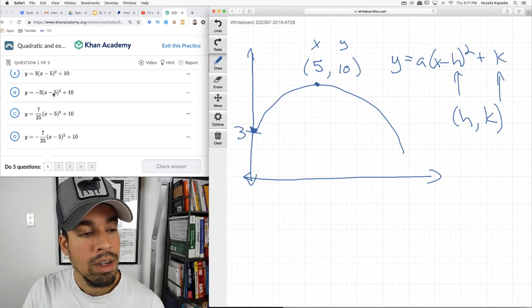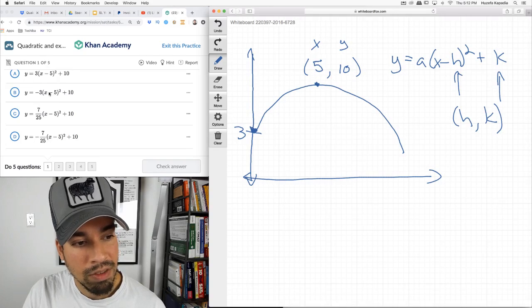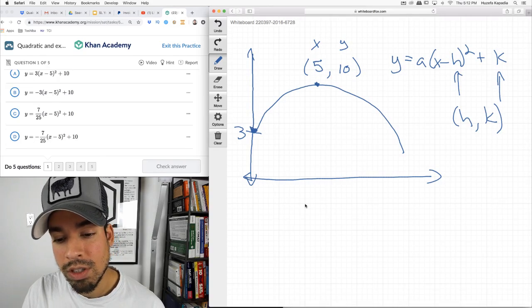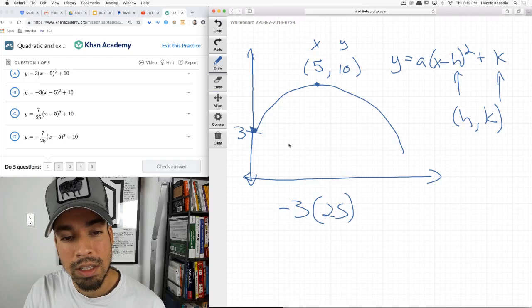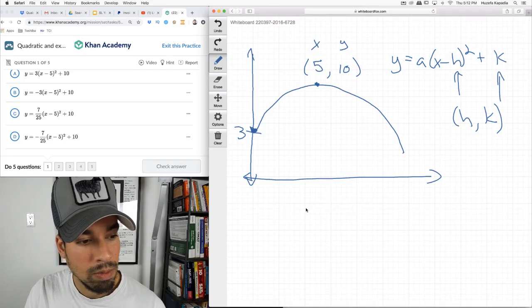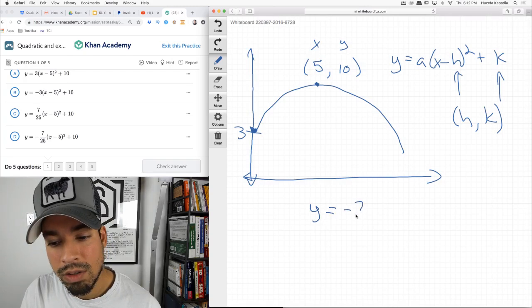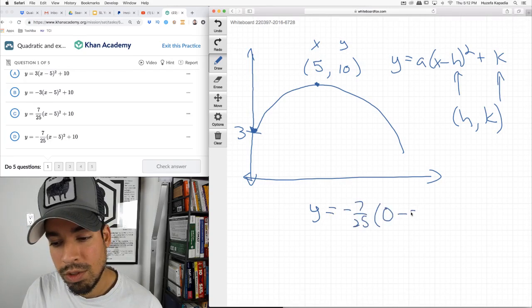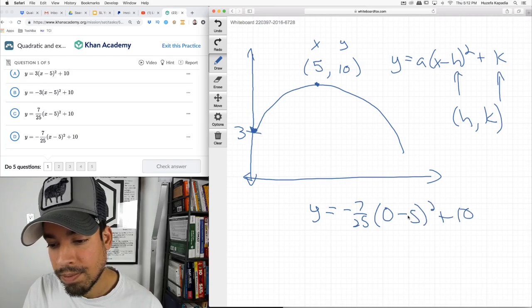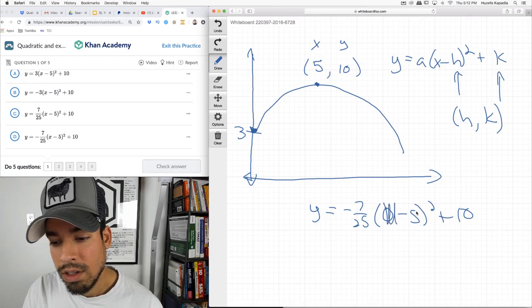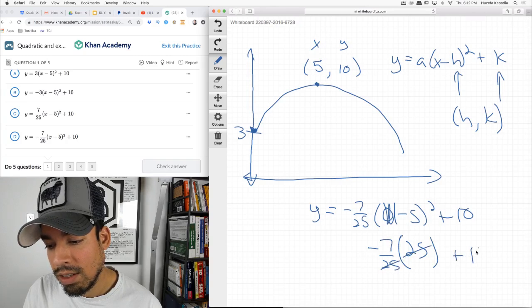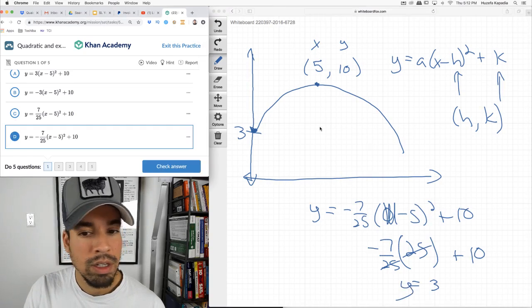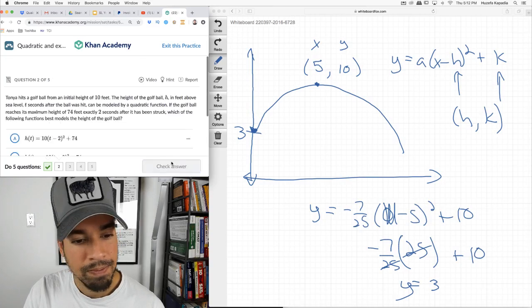These two are negative, so these make sense. This one looks like it's going to subtract too much because if we plug in 0, it's negative 5 squared, which is 25 times negative 3, which is negative 75. So let's test it out with D. It's negative 7/25ths times 0 minus 5 squared plus 10. Negative 5 squared is 25 times negative 7/25ths. These guys cancel out, and it's negative 7 plus 10, which equals 3. And that's what we wanted. So D will give us everything we need plus that initial height of 3.